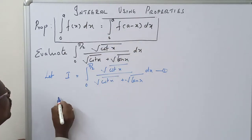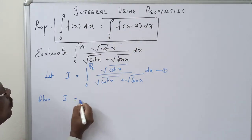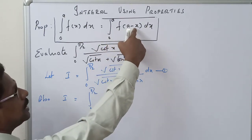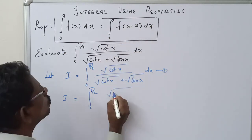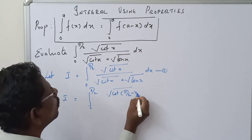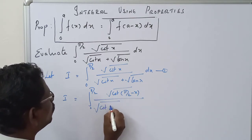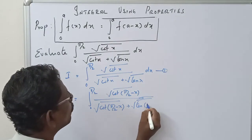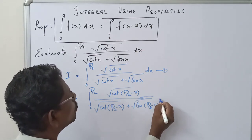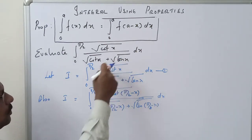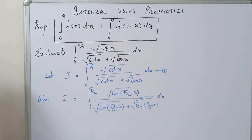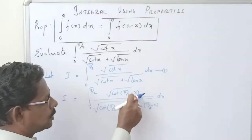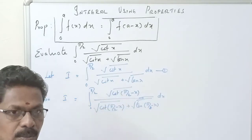Second, apply the property. I equals the integral from 0 to π/2 of f(a minus x), where a equals π/2. So we substitute: √(cot(π/2 − x)) divided by √(cot(π/2 − x)) plus √(tan(π/2 − x)) dx. Instead of x, we put π/2 minus x because the property uses a minus x, and here a means π/2. So cot(π/2 − x) and tan(π/2 − x) are substituted using that property.